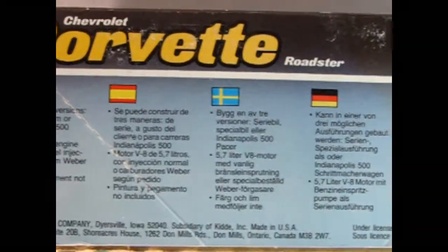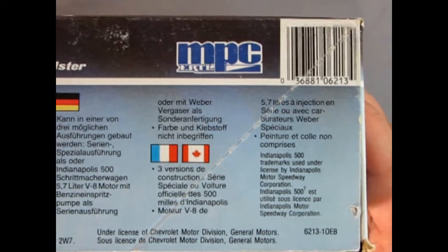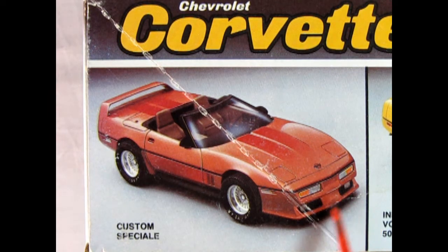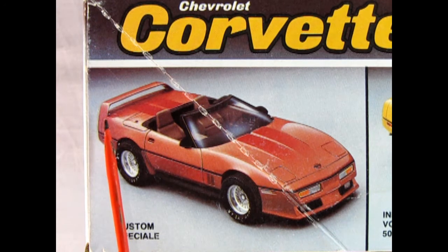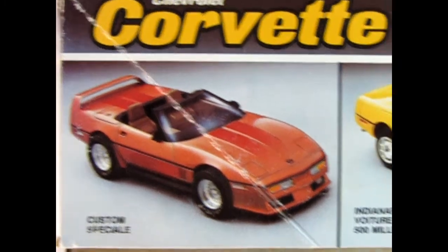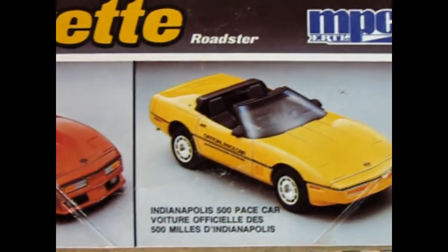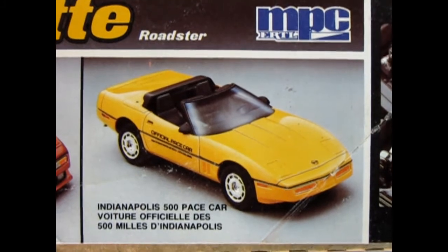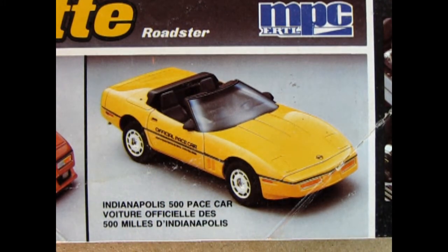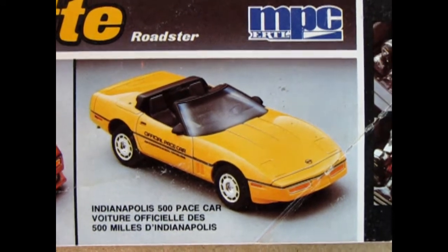On this side of the box we can see our building options. They've kept the original front clip from the MPC 1985 kit, although they've changed the rear spoiler. We also get a choice of new mag wheels. Here's the Indy pace car version which is yellow with the Indy decal on the side. It's very awesome and I'll show you one that I built up at the end of this video.